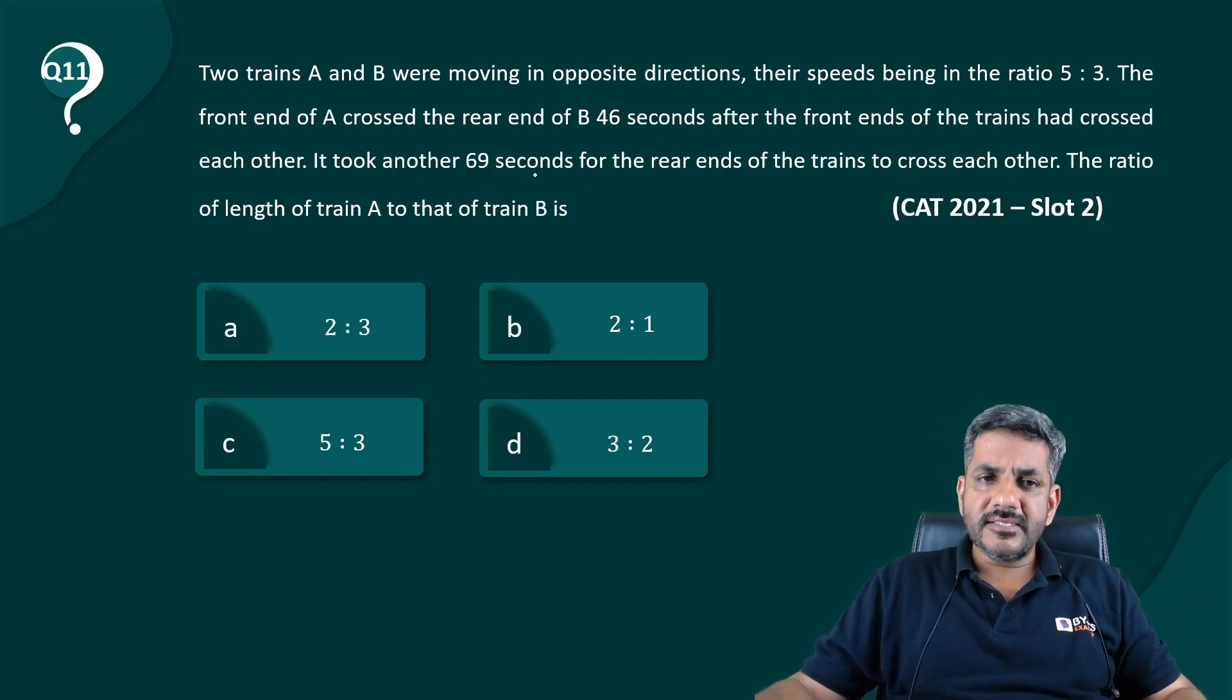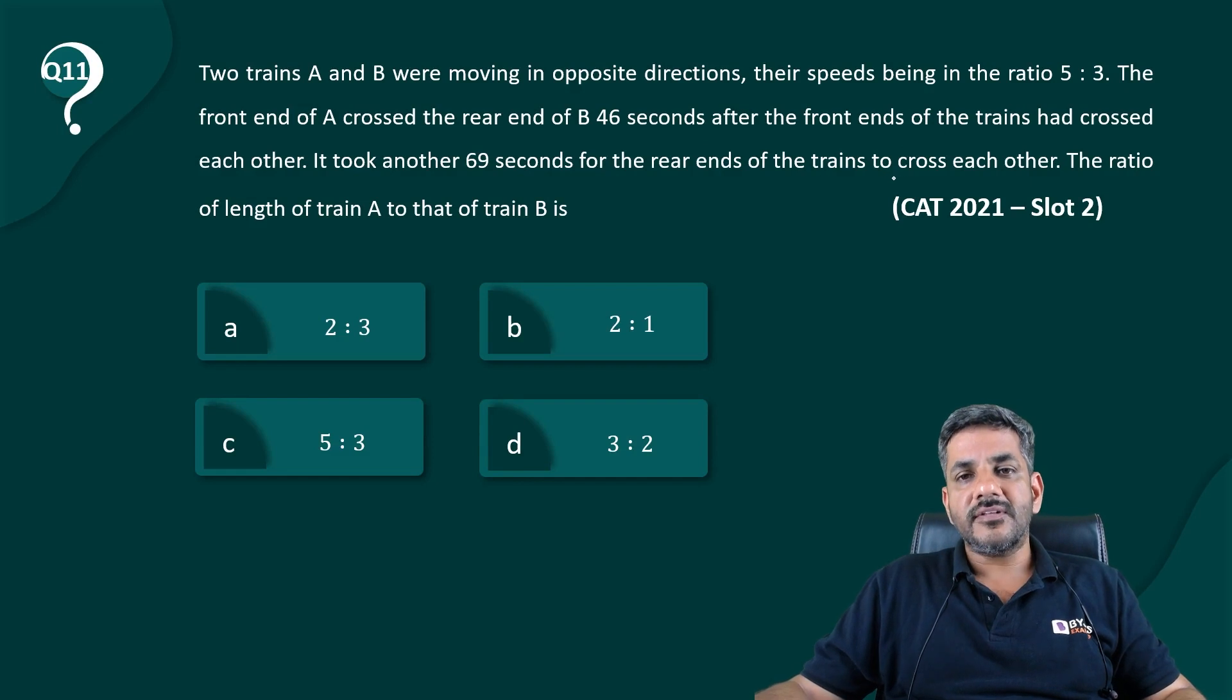It took another 69 seconds for the rear ends of the trains to cross each other. The ratio of length of train A to that of train B.